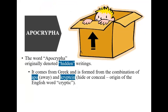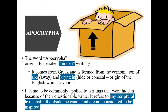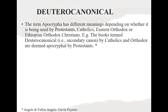The word 'apocrypha' originally meant hidden writings, coming from a root word very similar to where we get our English word 'cryptic' from. The term apocrypha has different meanings depending on whether you're Protestant, Catholic, or Orthodox. When a Catholic says 'apocrypha,' you're talking about two different things. They have additional books in their Bible that they call 'deuterocanonical' — meaning a second canon, part of Scripture.